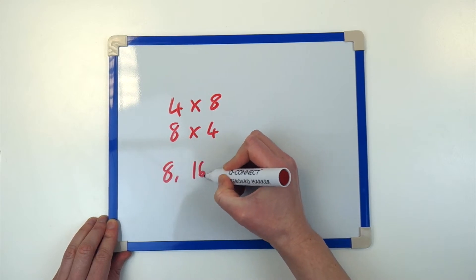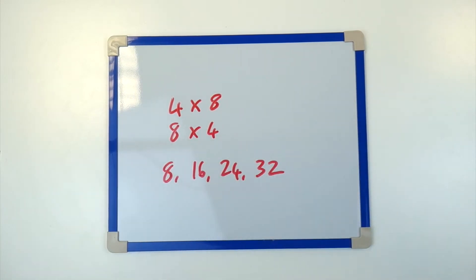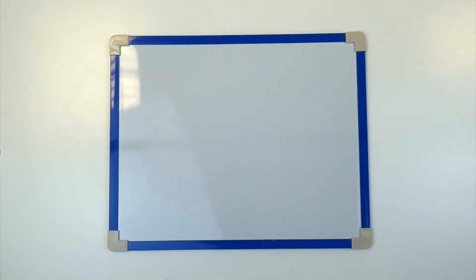In Japan, children are explicitly taught to put the smallest number first. 9 lots of 3? Don't do that. Do 3 lots of 9.